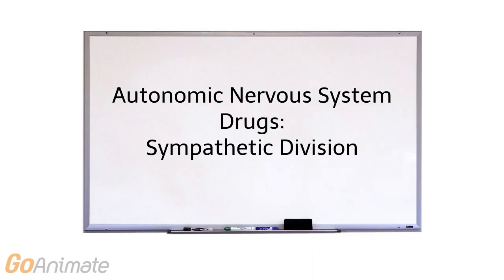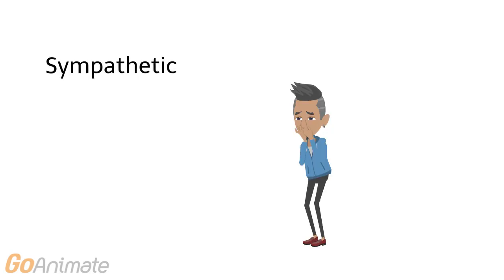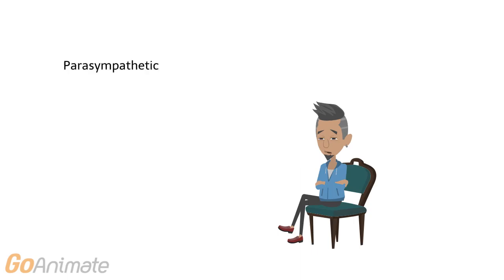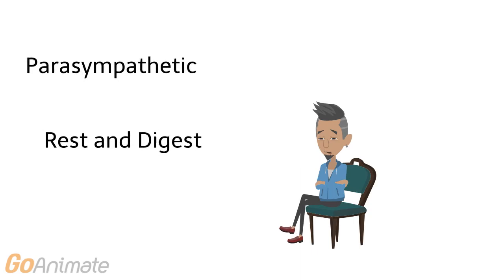Let's learn about autonomic nervous system drugs affecting the sympathetic nervous system. The autonomic nervous system has two divisions. The sympathetic division responds to stress and activates the fight or flight response. The parasympathetic division activates the rest and digest response during non-stressful conditions.